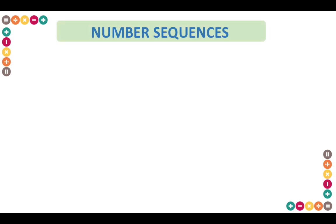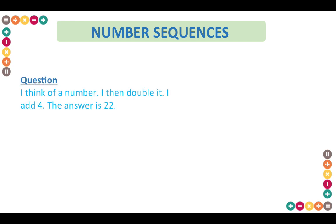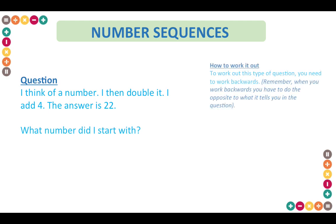Here is a sample question based on number sequences. I think of a number, I then double it, I add four, the answer is 22. What number did I start with? To work out this type of question you need to work backwards. When you work backwards you have to do the opposite — so where it says add four, you would have to minus four because you are working backwards to find the original number.